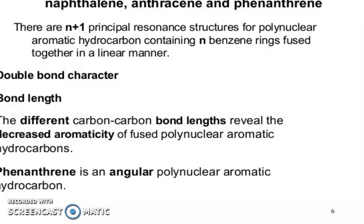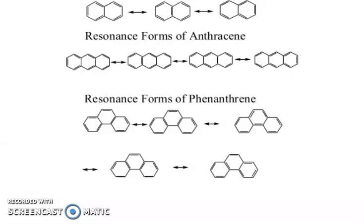Phenanthrene is an angular polynuclear aromatic hydrocarbon. Resonance forms of naphthalene: you can see three. Resonance forms of anthracene: you can see four. Resonance forms of phenanthrene: you can see five.